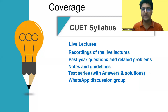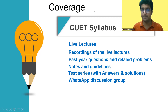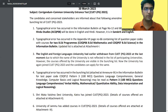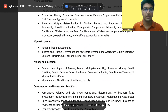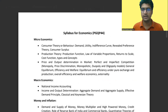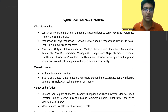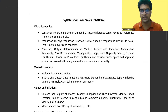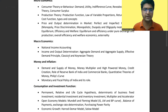So what will be covered in this course? The full CUET syllabus will be covered, including Part A. We'll begin with microeconomics — consumer theory, production theory, monopoly, basic game theory, models and general equilibrium, and externality. All these topics will be covered.